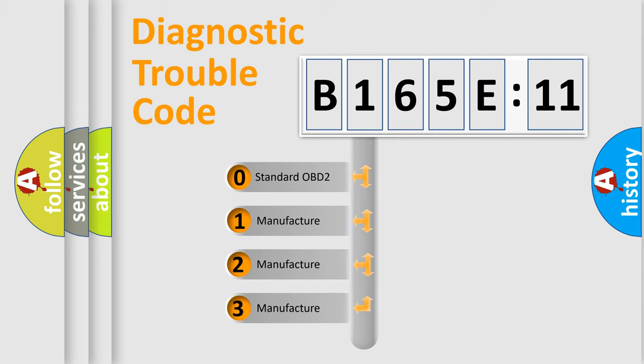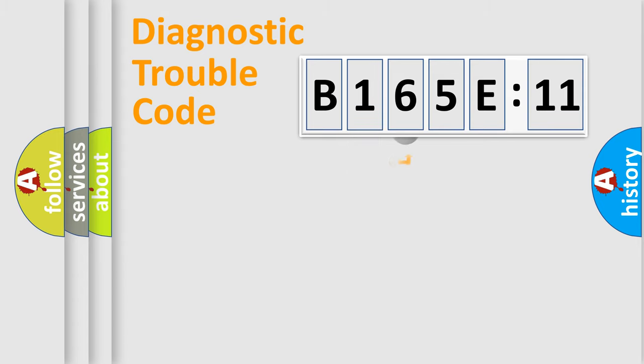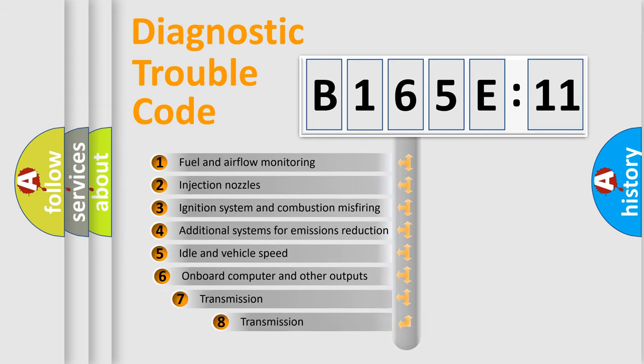If the second character is expressed as zero, it is a standardized error. In the case of numbers 1, 2, 3, it is a manufacturer-specific expression of the car-specific error.